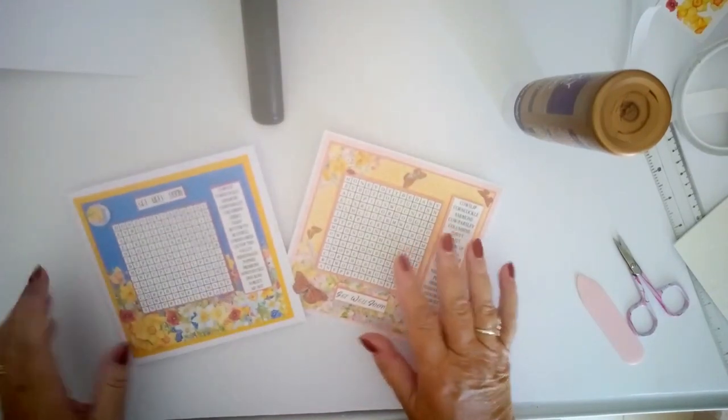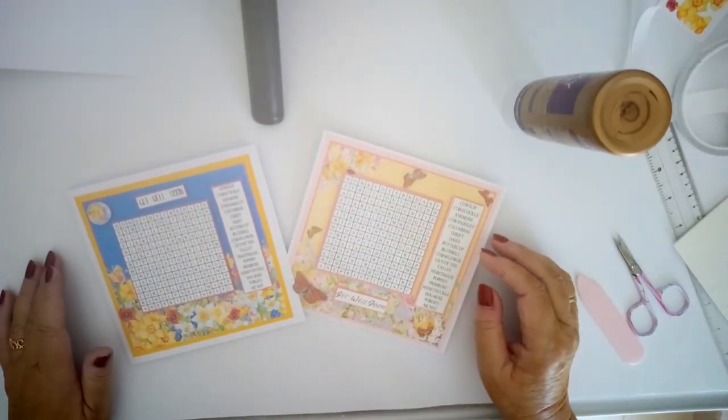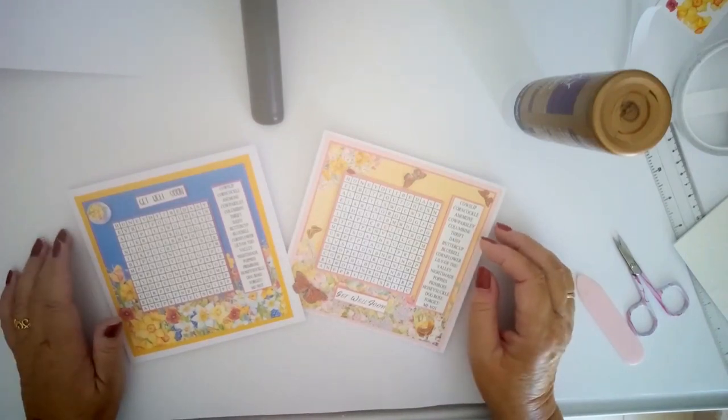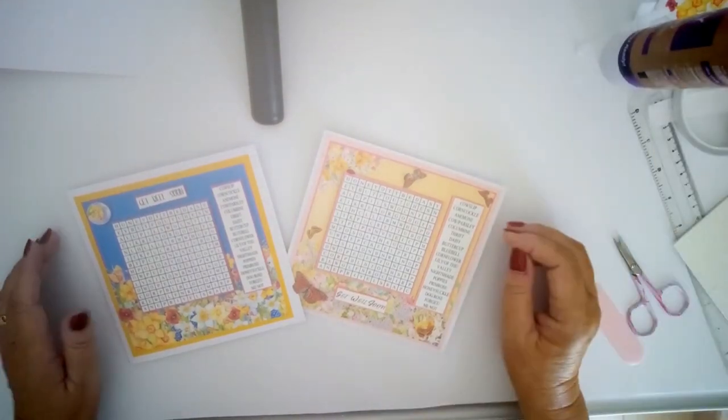So if you want to make these cards you need the downloads from Crafts You Print. I'll put the links underneath but they are £1.20 for the kit. If you're in the USA just click on the pound sign on the top and change it into dollars and you'll see that it's $1.66.